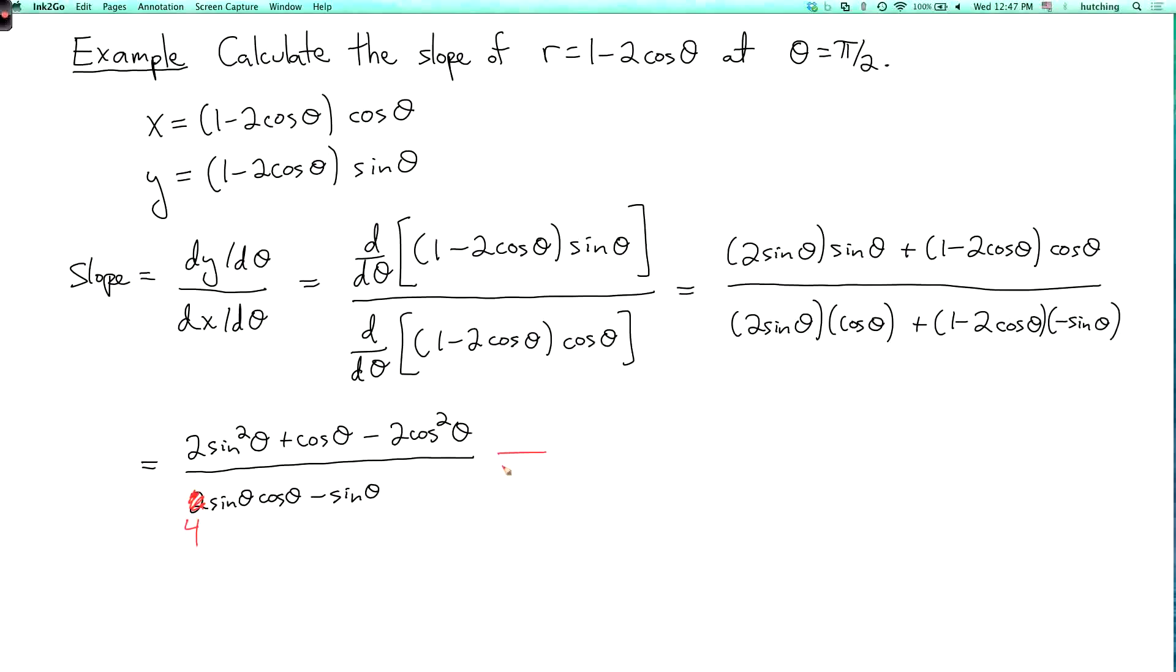Now I want to plug in θ = π/2. So when theta equals π/2, cosine is zero and sine is one. So I can cross out everything that has a cosine in it, and I just get 2 over -1. So the final answer is -2.